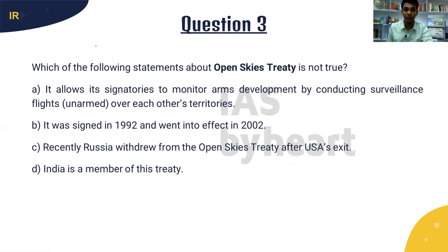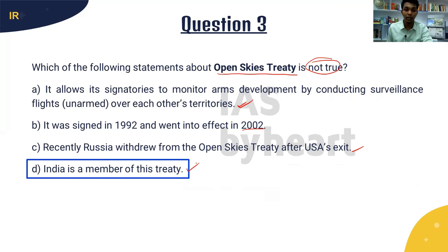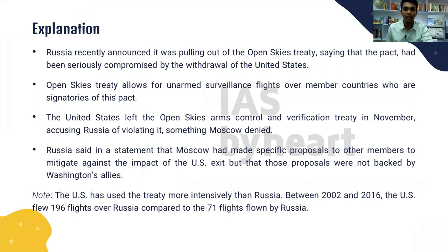The next question on international relations is about the Open Skies Treaty. It allows its signatories to monitor arms development by conducting unarmed surveillance flights over each other's territories — that is correct. It was signed in 1992 and went into effect in 2002. Russia recently withdrew from the Open Skies Treaty after the USA's exit. The question asks which statement is NOT true, and the answer is option D — India is not a member of this treaty.